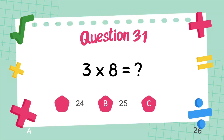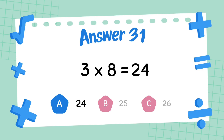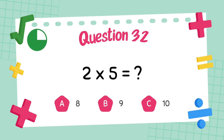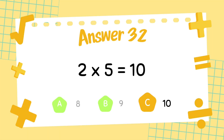What is 3 multiply 8? The answer is 24. What is 2 multiply 5? The answer is 10.